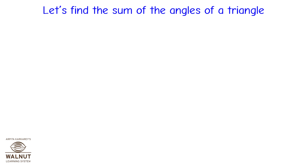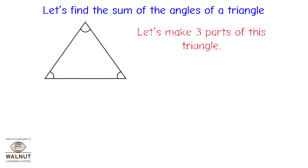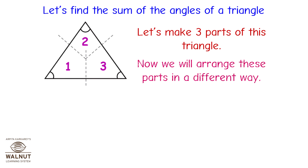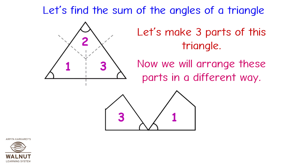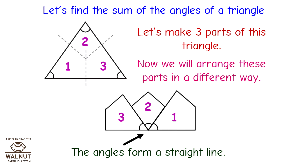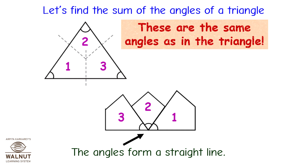Let's find the sum of the angles of a triangle. Let's make three parts of this triangle. Now we will arrange these parts in a different way. The angles form a straight line. These are the same angles as in the triangle.